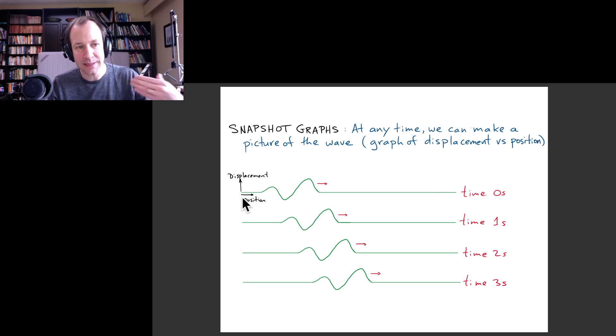On the x-axis, we have position, the position along, in this case, the string for our simulation, and the y-axis is displacement. So it really is just what the wave looks like.